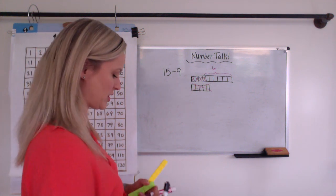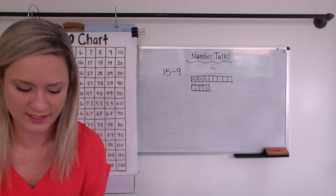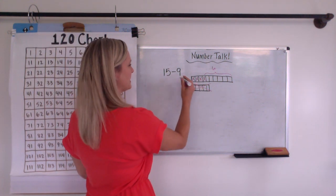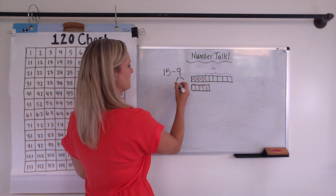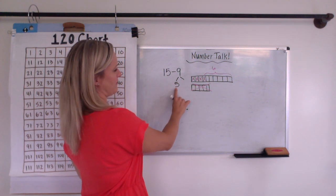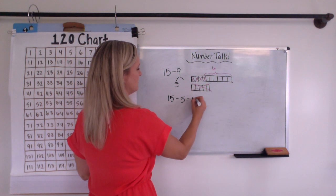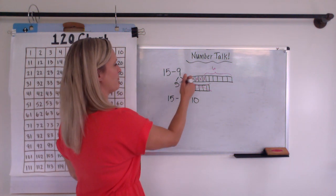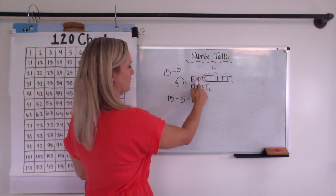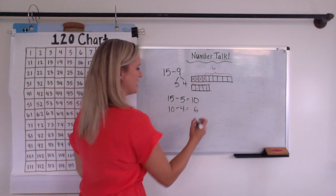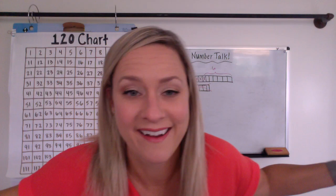Maybe you actually thought about breaking up the 9 like this. Kind of like what we did here, but breaking it into a 5. Because 15 minus 5 is 10. And then minus 4 more. 10 minus 4 is 6. You may have thought about it like that. I don't know.